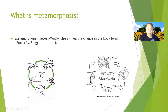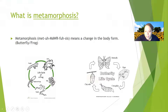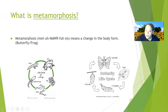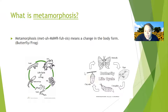So what is metamorphosis? That's a big word, but it means a change in body form — that's when their bodies change. Here's a butterfly's life cycle: eggs, caterpillar, chrysalis, butterfly. It starts with eggs on a leaf, the eggs hatch and become a caterpillar, then the caterpillar becomes a chrysalis — a lot of people call it a cocoon, but the correct word is chrysalis.